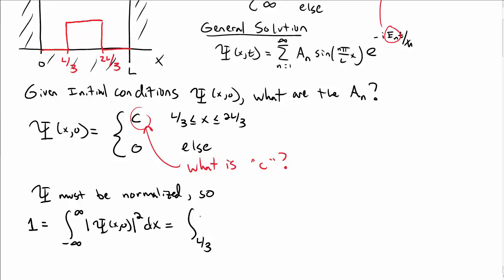So that tells us that the integral from L over 3 to 2L over 3 of C squared dx must be equal to 1, which tells us that, solving for C, that C is the square root of 3 over L.